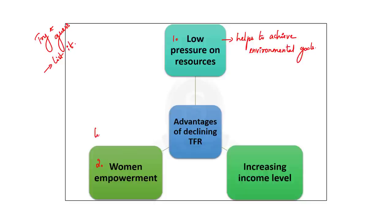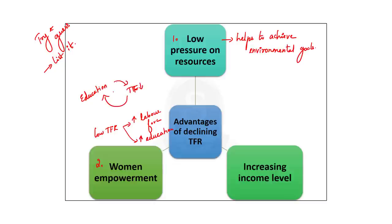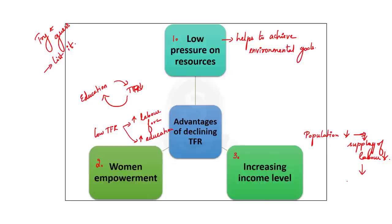The second advantage is women empowerment. With lower TFR, women are increasingly participating in the labor force and getting more education — this is a beneficial cycle, because women getting educated leads to falling TFR, and falling TFR allows women to get more educated. The third advantage is increasing income: with TFR and population falling, the supply of labor in the economy also comes down, allowing people to negotiate better wages with their employers.